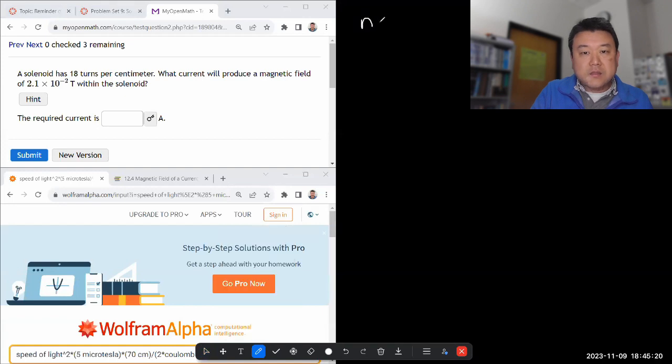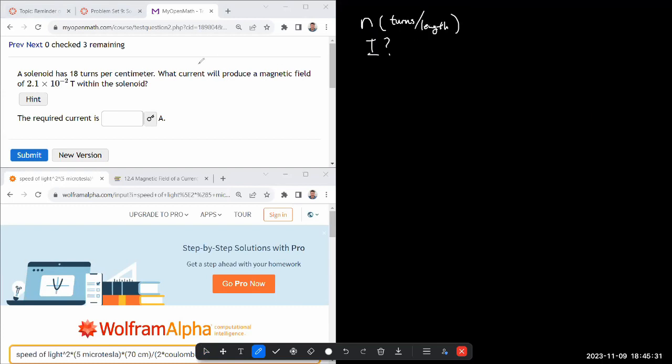Okay, so we are given n, number of turns per length. What current will produce magnetic field 2.5 times 10 to the minus 2 tesla within the solenoid? So we are given B that we are trying to produce.